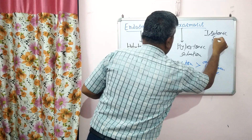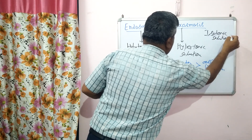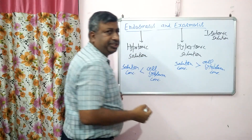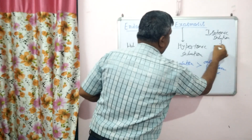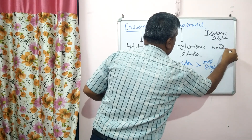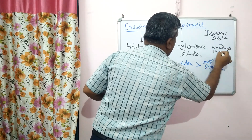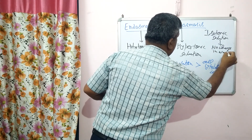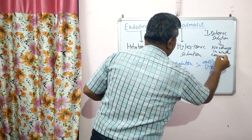If both solution concentrations are equal, then it is known as isotonic solution. In case of isotonic solution, there is no change in cell water content — no change in water content, no change in the cell.